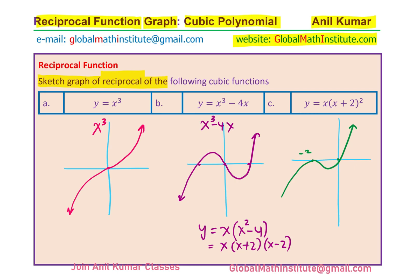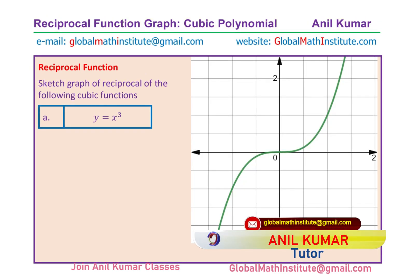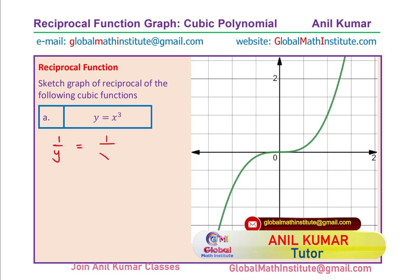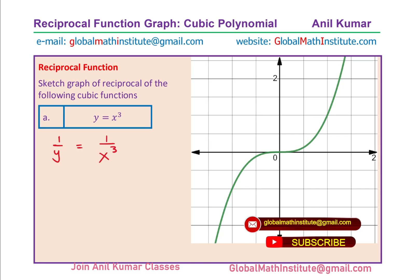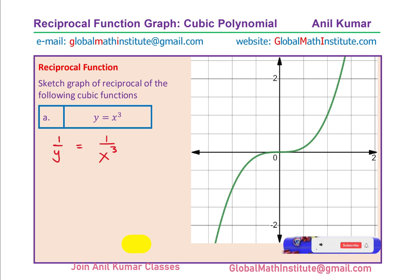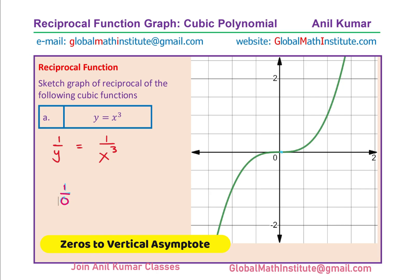Here is the first one. I have enlarged the graph of y equals x cubed, and now we will look into the reciprocal — meaning we are looking for 1 over y, or the graph of 1 over x cubed. One of the critical points is 0 itself. If I put a value of 1 over 0, it is not defined. This is represented as a vertical asymptote.